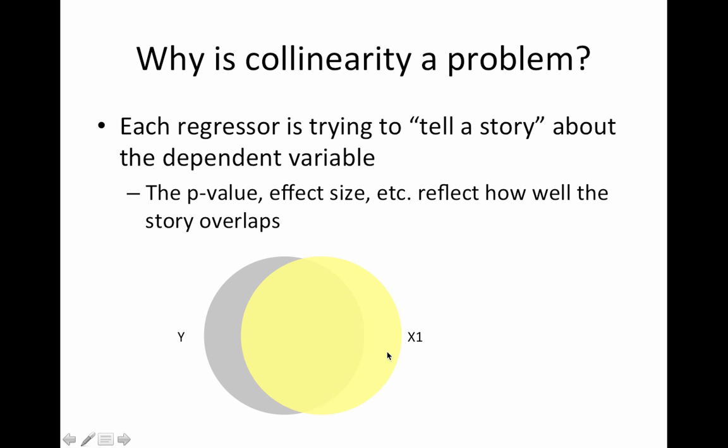Here we have a better witness. More of what they say actually pertains to the data or the accident and less doesn't. This would be a better regressor. This explains more of the variability in y so it'll have a better p-value.